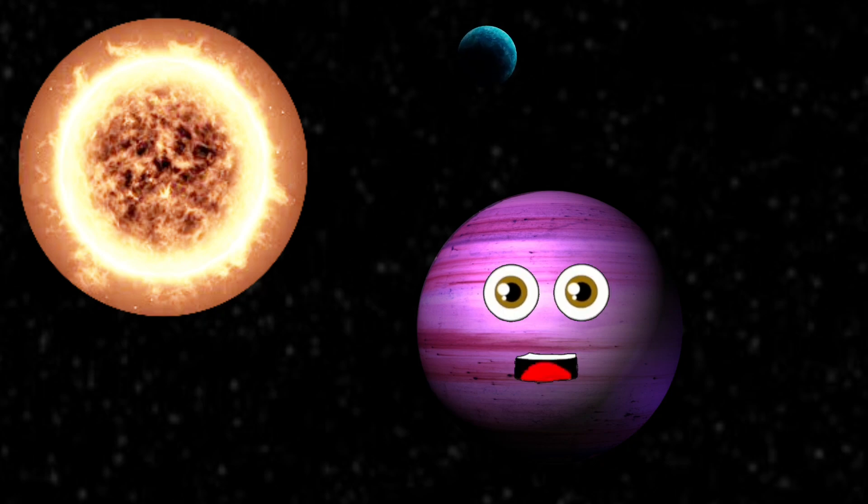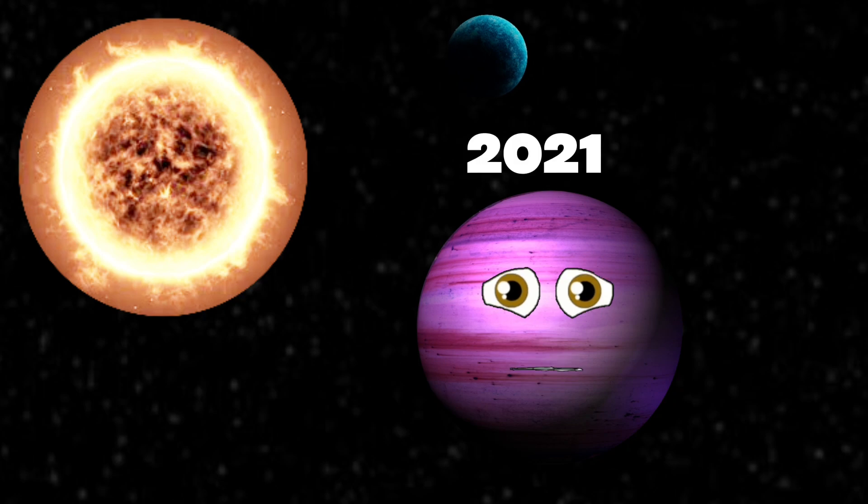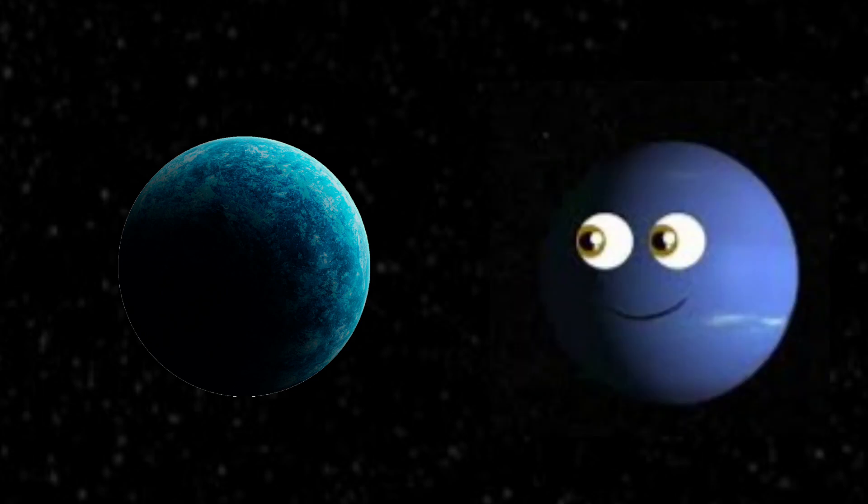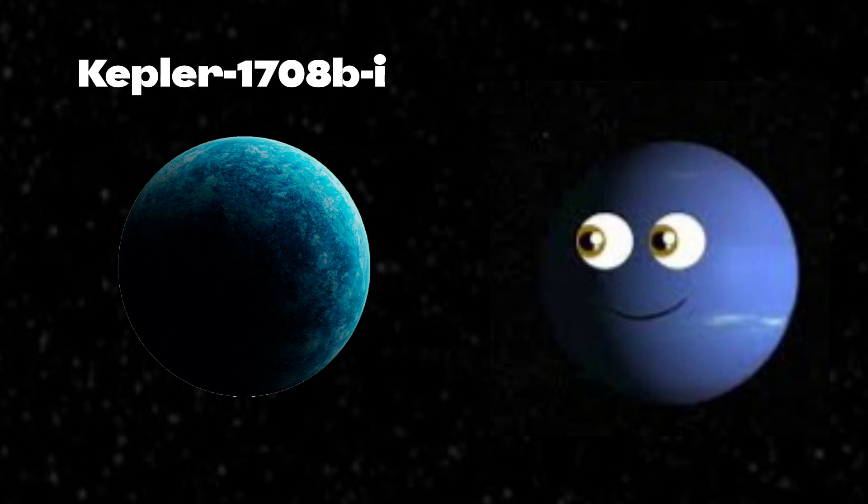I have signs of an orbiting exomoon found in 2021 by David Kipping and colleagues. The candidate exomoon is thought to be Neptune's size. Its name is Kepler-1708bi.